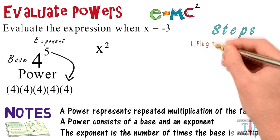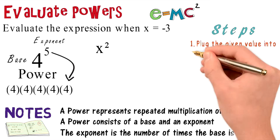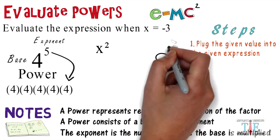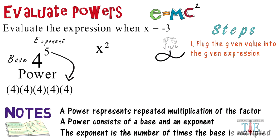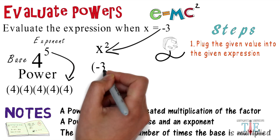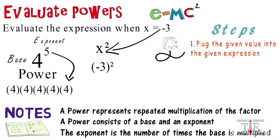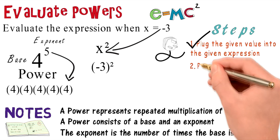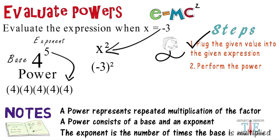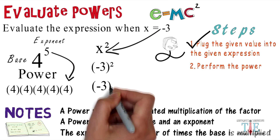Here are some steps to help you solve this problem. Step one: plug the given value into the given expression. Take negative 3 and plug it in for x, so you have negative 3 to the second power. Check off step one and move on to step two: perform the power.